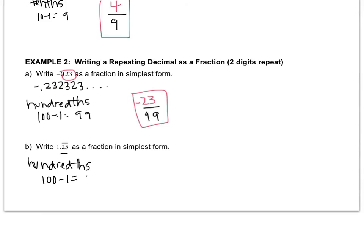So 100 minus 1 is 99. So that means my denominator is 99. The 25 is repeating, so that's going to be the numerator. And you can check, grab your calculator, 25 divided by 99 is 0.252525, et cetera.